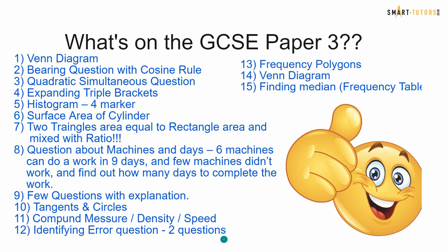There were also ratio questions — the examiner included more than 10 or 12 ratio questions across all three papers. 2019 GCSE Maths is full of ratio questions. There was a question about machines and days: six machines can do a job in nine days, a few machines didn't work — find how many days to complete the remaining work. There were questions requiring written explanation, a tangent and circles question to find a value, compound measure questions on speed and density, error identification questions, and both histogram and frequency polygon questions. Venn diagram and finding the median in a frequency table also appeared.